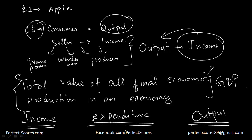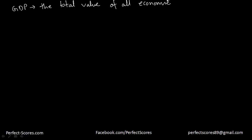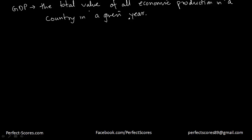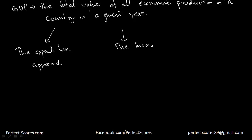So the formal definition: a country's gross domestic product is equal to the total value of all economic production in a country in a given year. We take a standard uniform period of time — a year. GDP can actually be calculated in three ways: using the expenditure approach, the income approach, and the output approach.